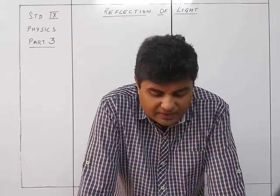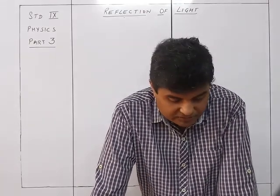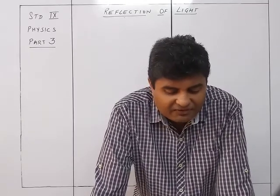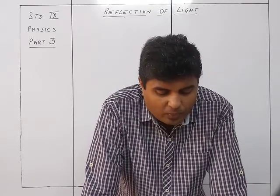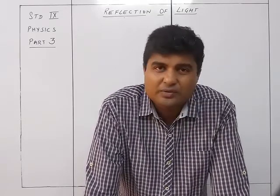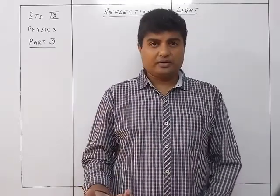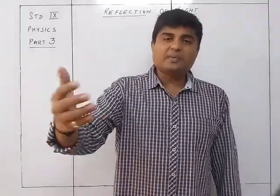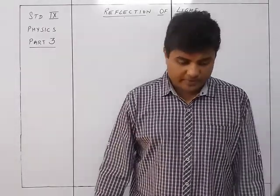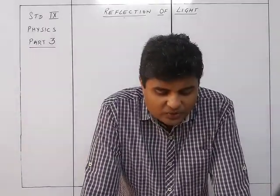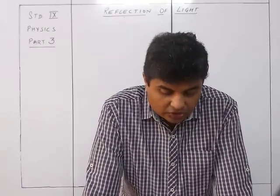For an object kept between two inclined plane mirrors, we get many images. This is because light rays after reflection from one mirror fall on the other mirror — the image formed by one mirror acts as the object for the other mirror. This continues, generating successive images, until no more reflection can occur.